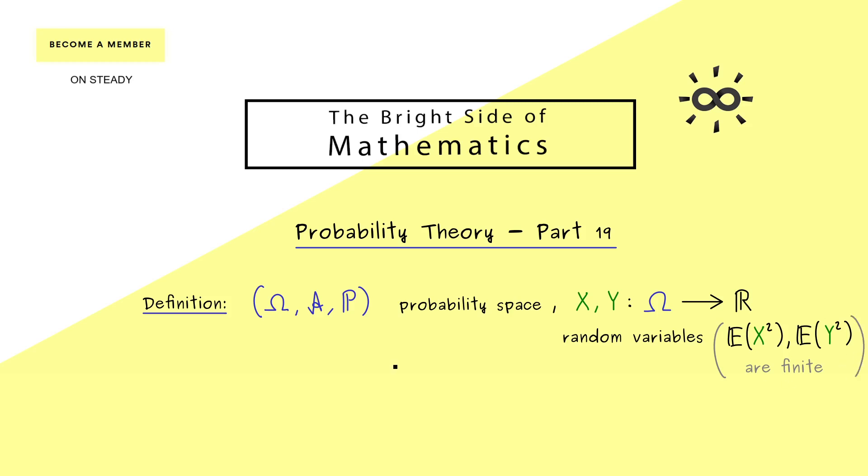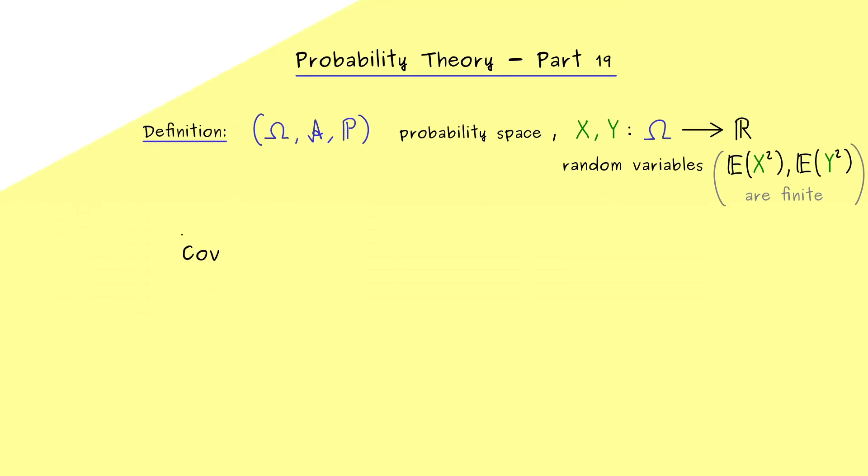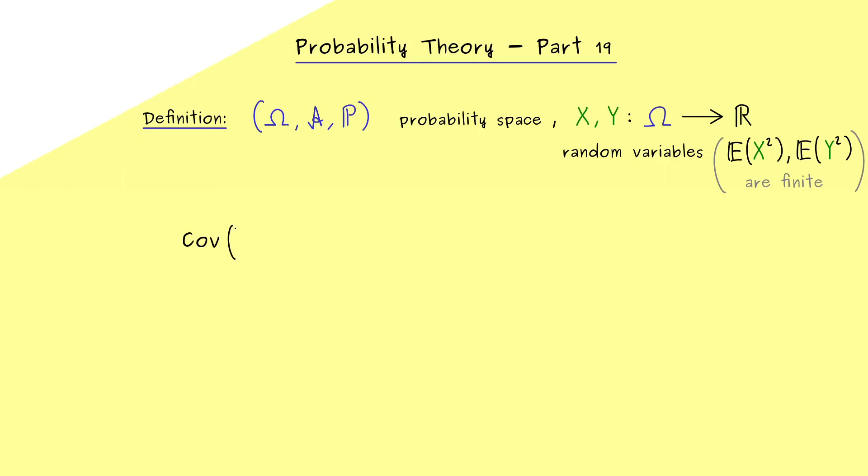And then, we are able to define the so called covariance of X and Y. And here you see, this is the common abbreviation we have. And now indeed, the definition is not hard to remember, because it is very similar to the variance.